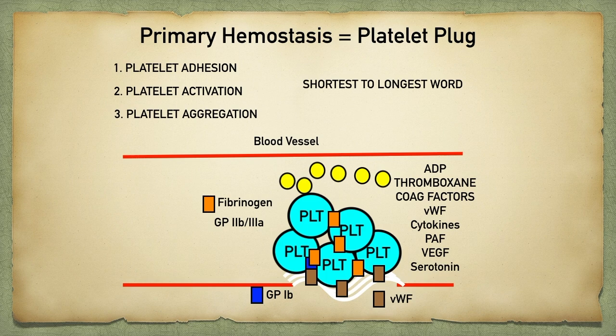The coagulation cascade, which is secondary hemostasis, will be involved in forming a mesh-like structure over this platelet plug, and that will be discussed in future videos.